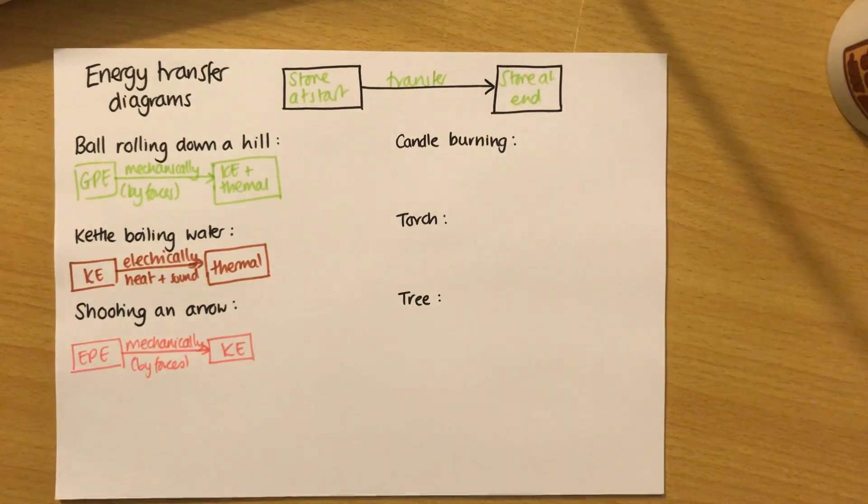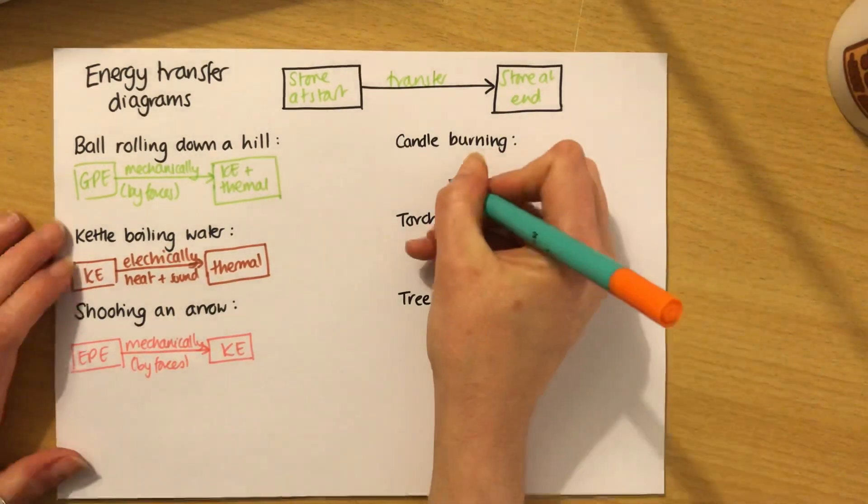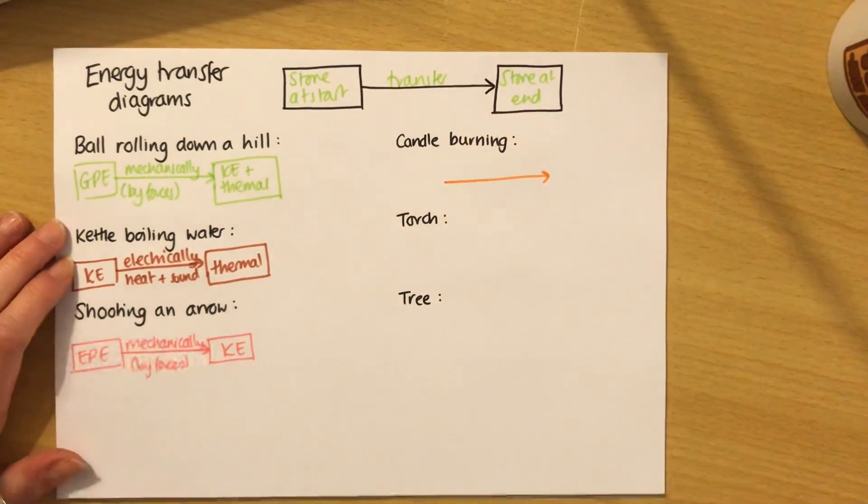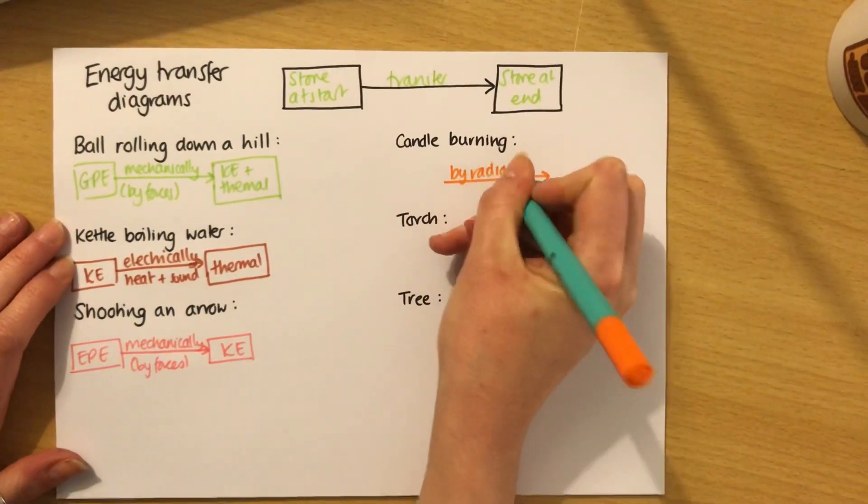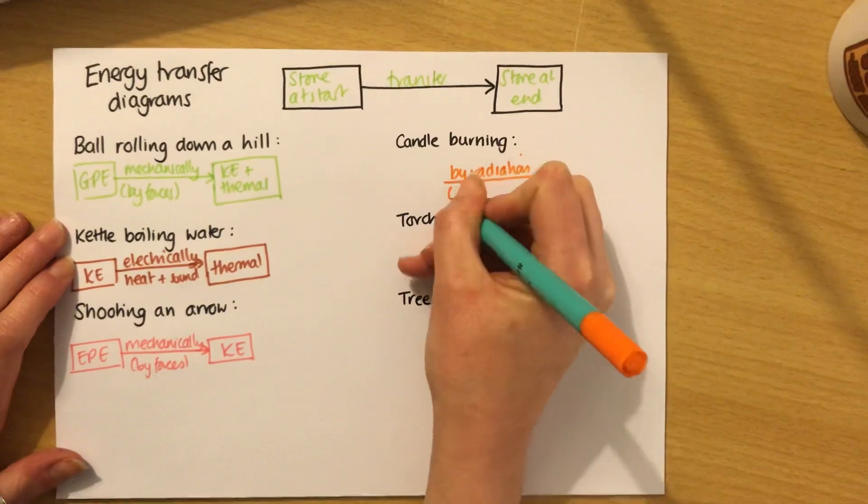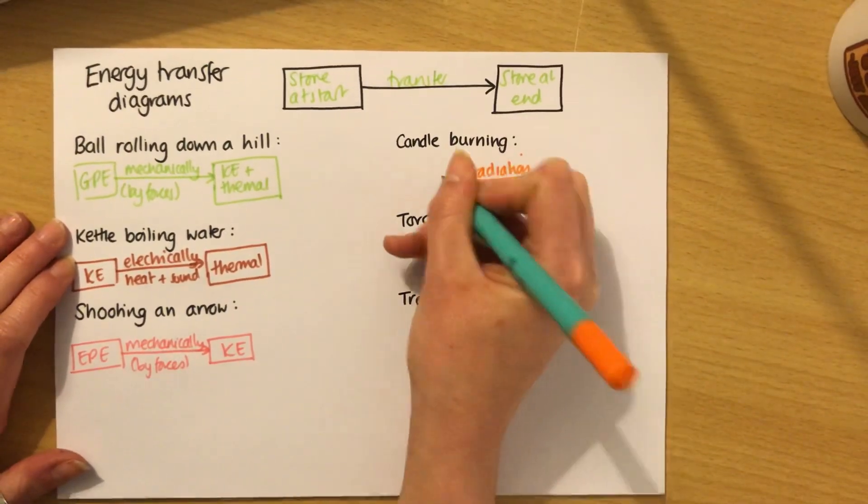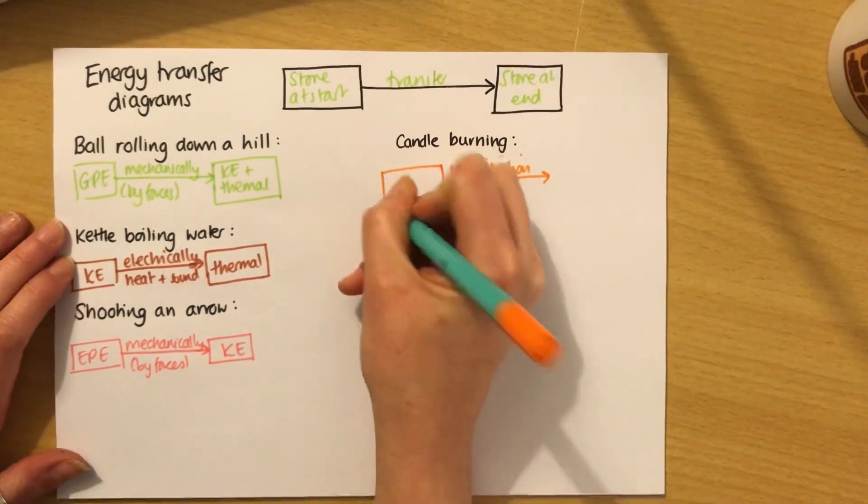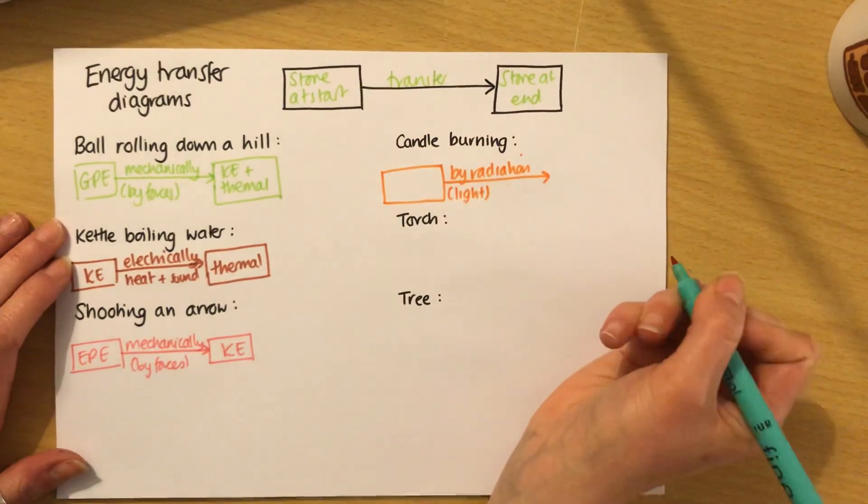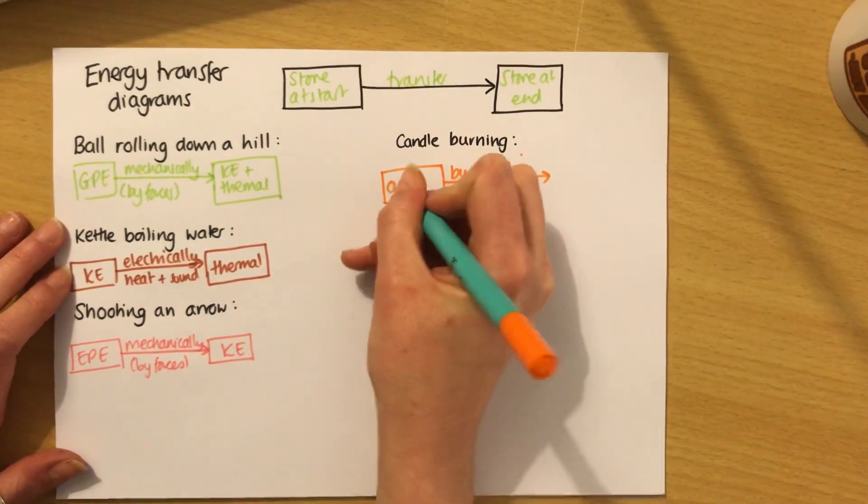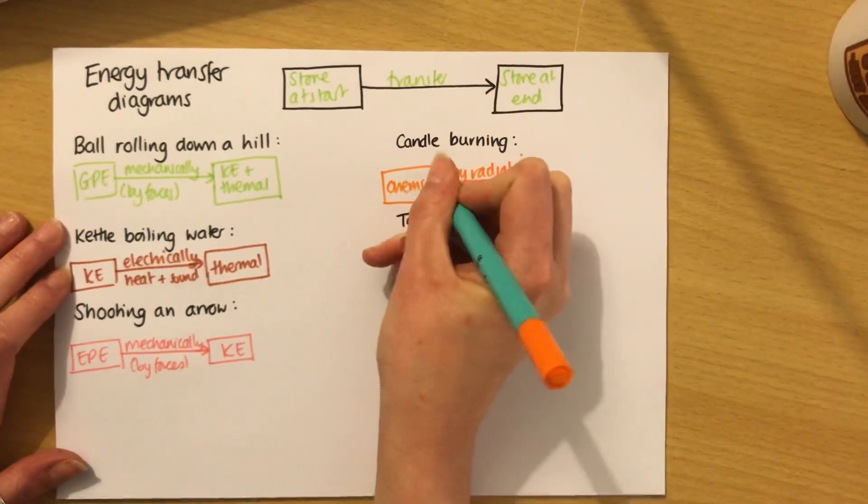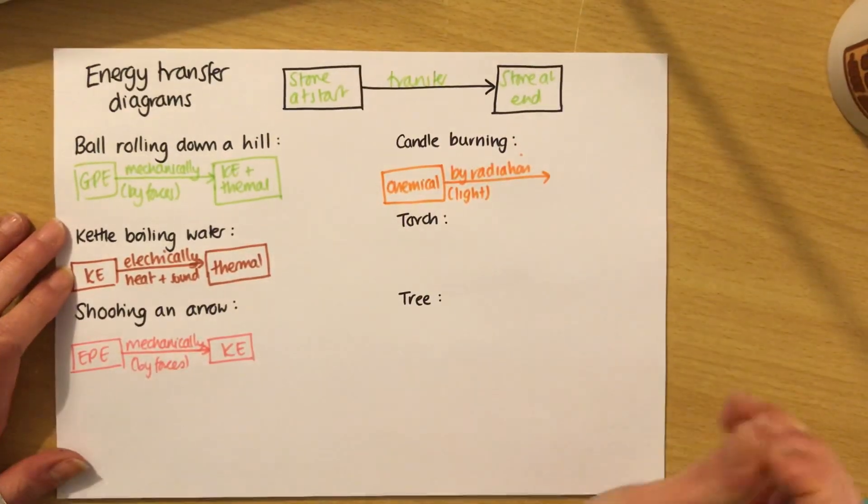A candle burning. When a candle burns, it produces light. We all know that. But light is actually not a store, it's a transfer. So light is going to go on my arrow. And I would write by radiation or light, either one. So where does that energy come from? A candle produces light through combustion, and combustion is a chemical reaction. So we start off with a chemical store.